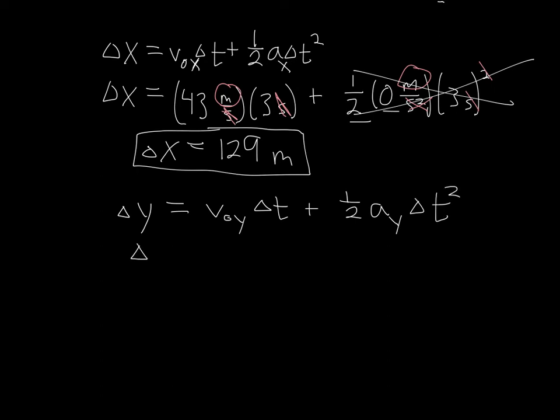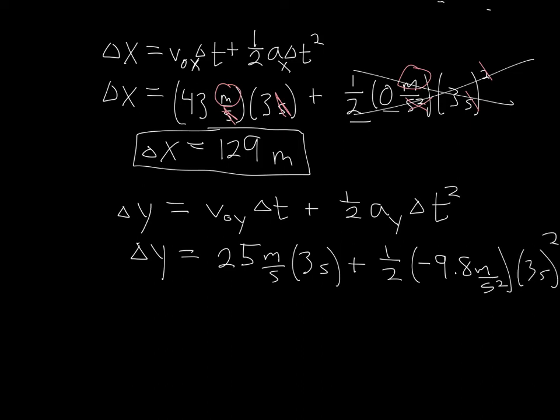Plug and chug your numbers in. Change in y is equal to 25 meters per second times my three seconds, plus my one half times my acceleration in the y of negative 9.8 meters per second squared, times my change in time of three seconds, all of that quantity squared.